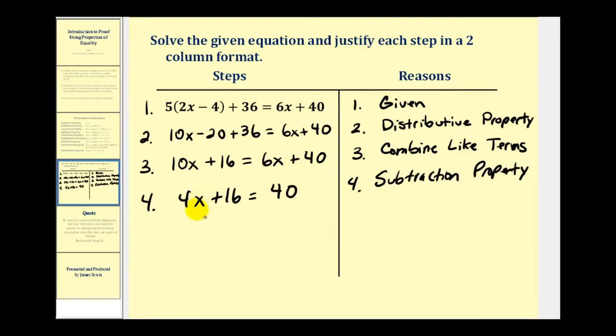Now to isolate this x, the next step would be to subtract 16 on both sides. That would give us 4x equals 24. So justification is the same reason as number four, the subtraction property of equality.